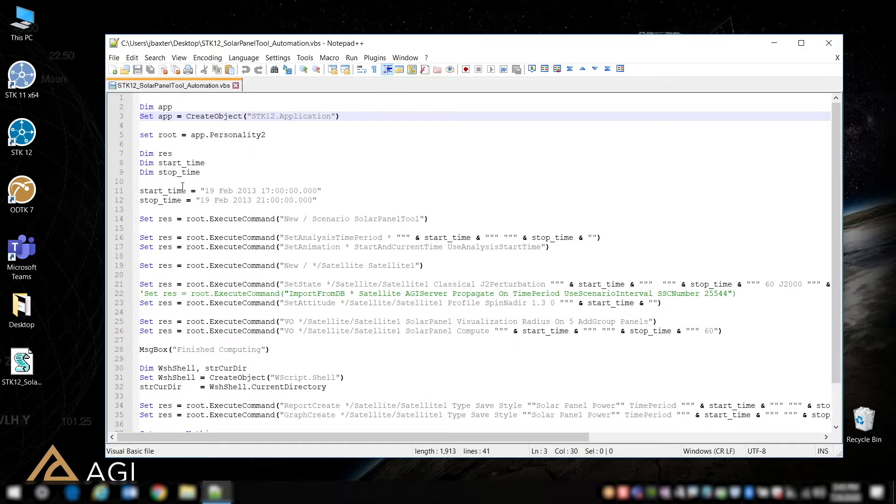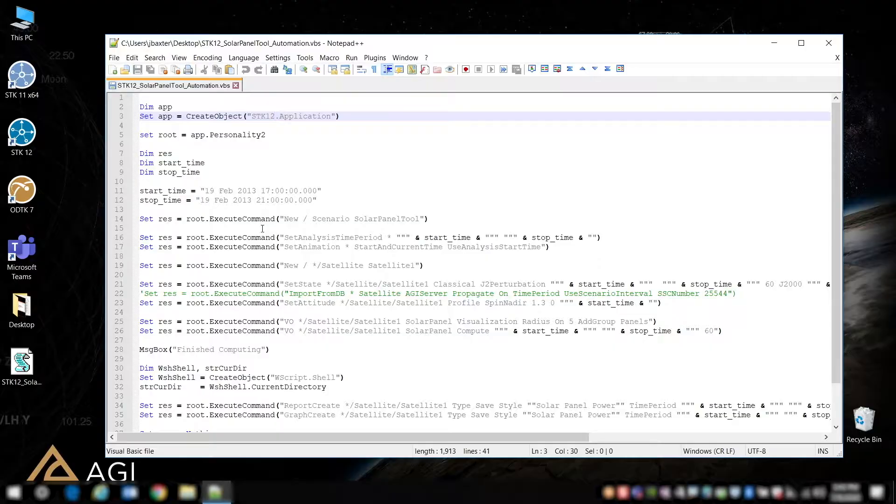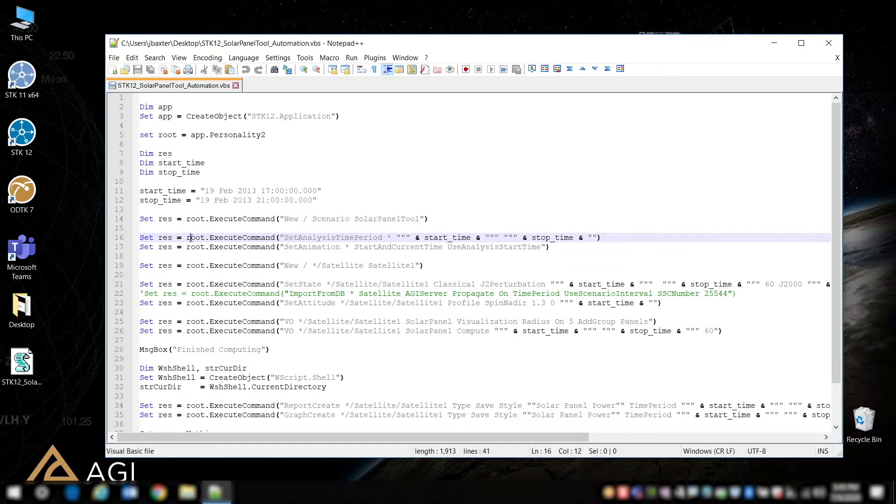It creates the STK object root, defines some variables for start and stop time, and then it starts building the scenario for you. And you see some of the commands there to create the scenario. It sets the start and stop time of your scenario. It creates a satellite for you. It sets the orbital parameters, defines the attitude,